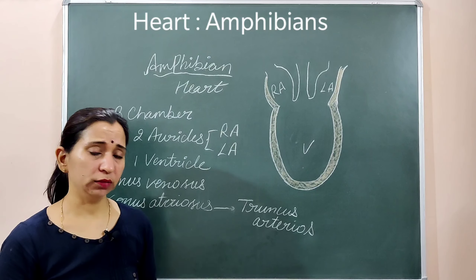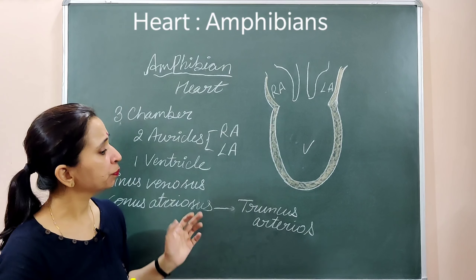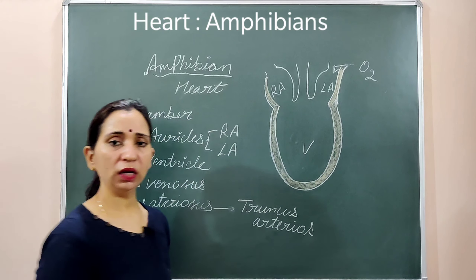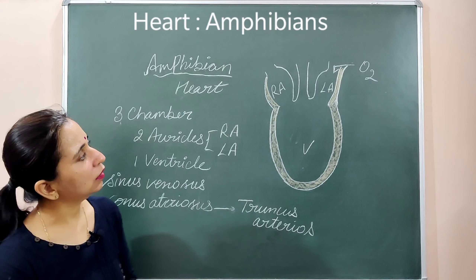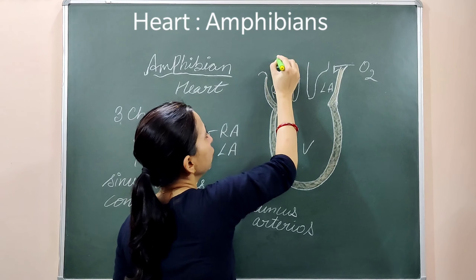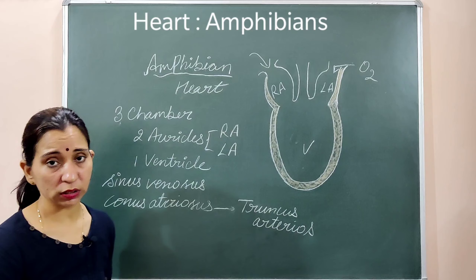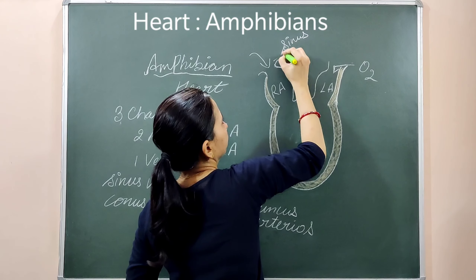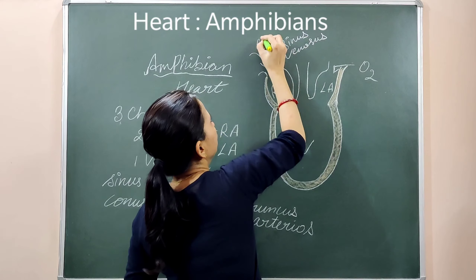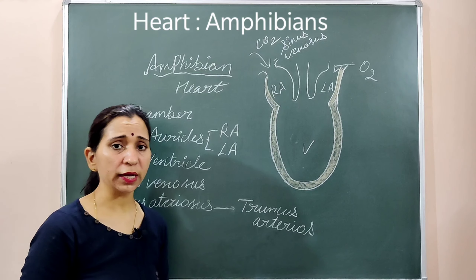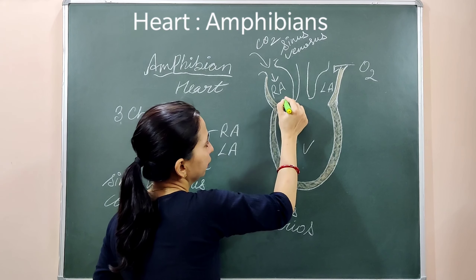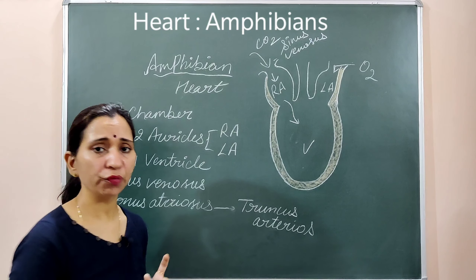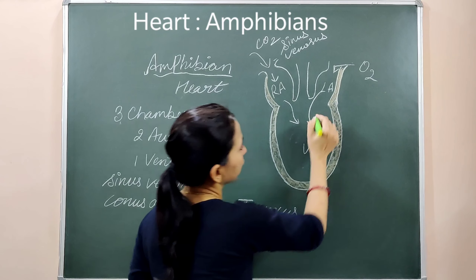The two atria receive blood from different sources. The left atrium receives oxygenated blood from the lungs, whereas the right atrium receives deoxygenated blood through the sinus venosus — blood first enters the sinus venosus from the body parts and then passes into the right atrium. From the right atrium, blood goes into the ventricle.